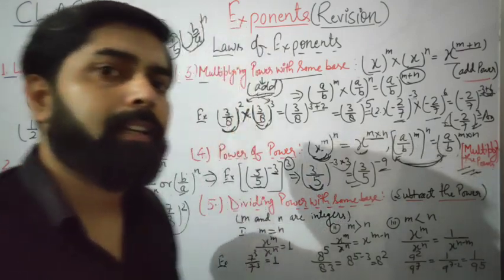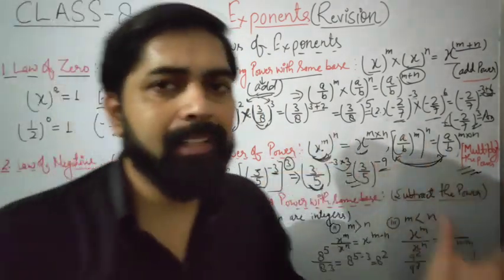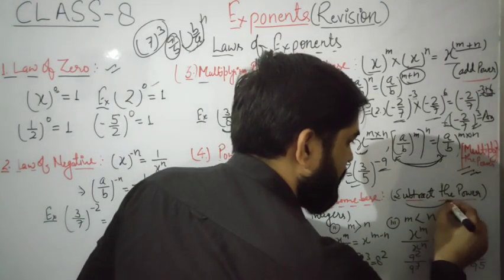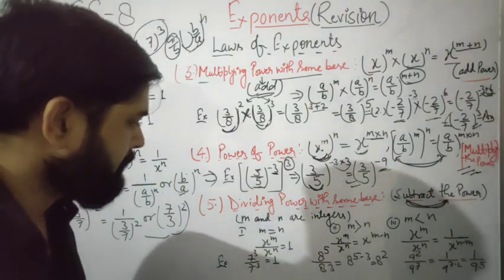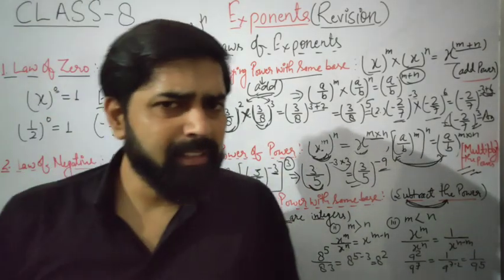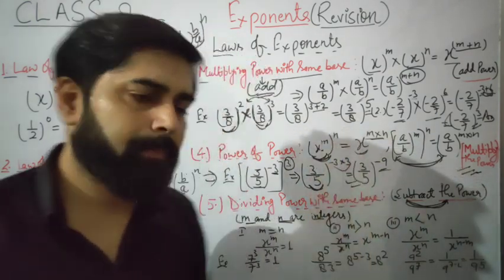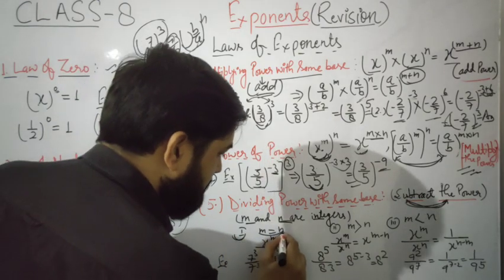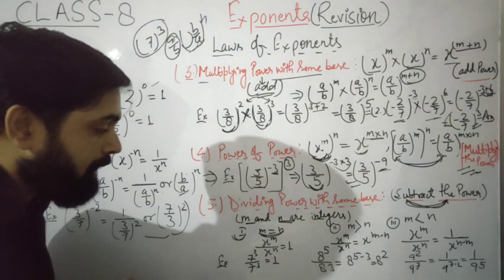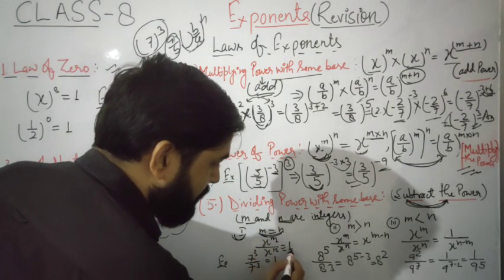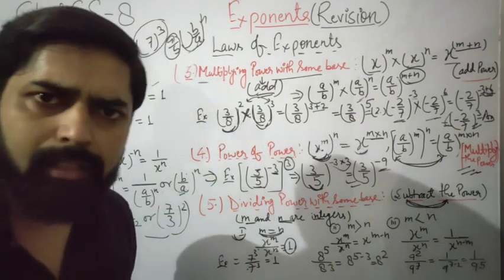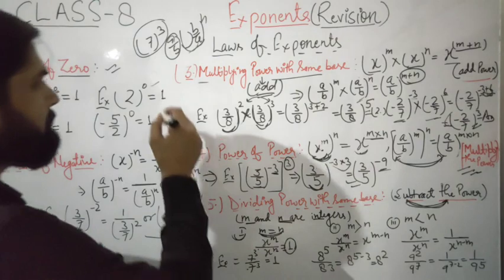The last law is dividing powers with the same base. When numbers are divided with the same base, we subtract the powers. There are three conditions in this law. First condition: when m and n are equal. If x to the power m divided by x to the power n and the powers are the same, the answer will be one.